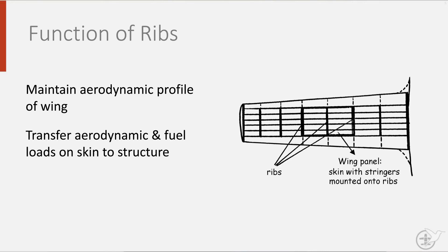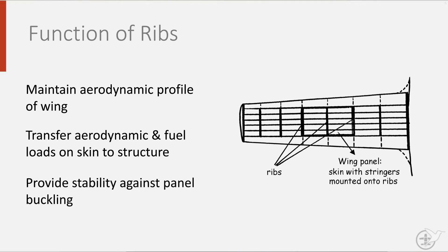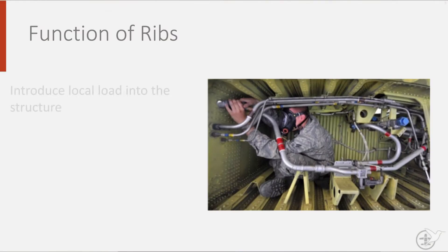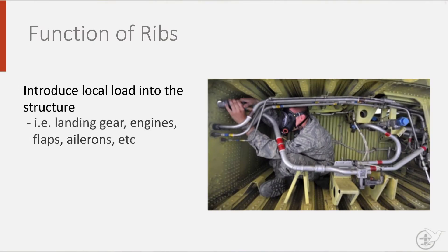Next to that, they also provide stability against panel buckling of the skin panels. Another important function of ribs is to introduce local load into the structure — for instance the landing gear, the engines, but also the flaps and the control surfaces such as the ailerons.